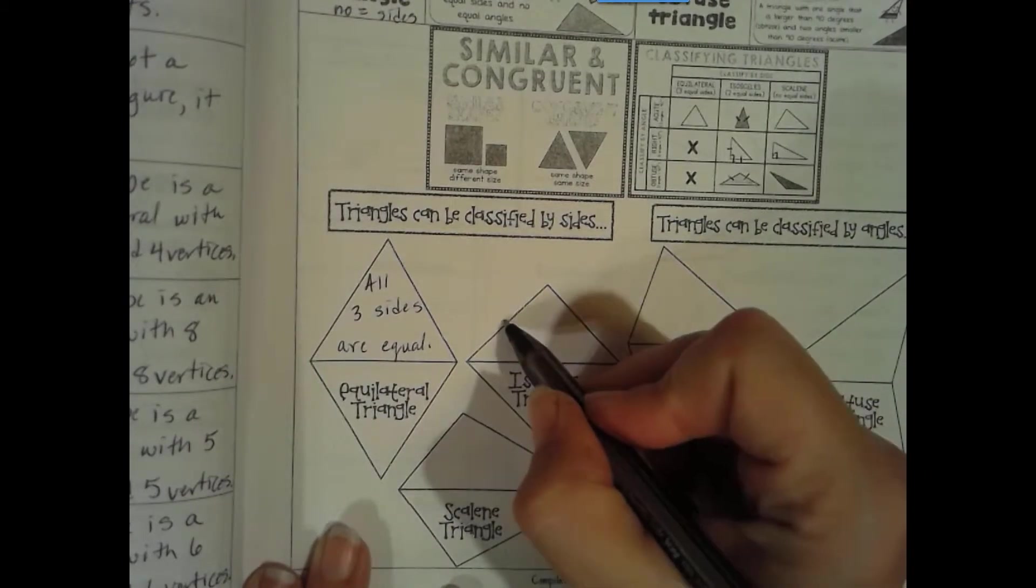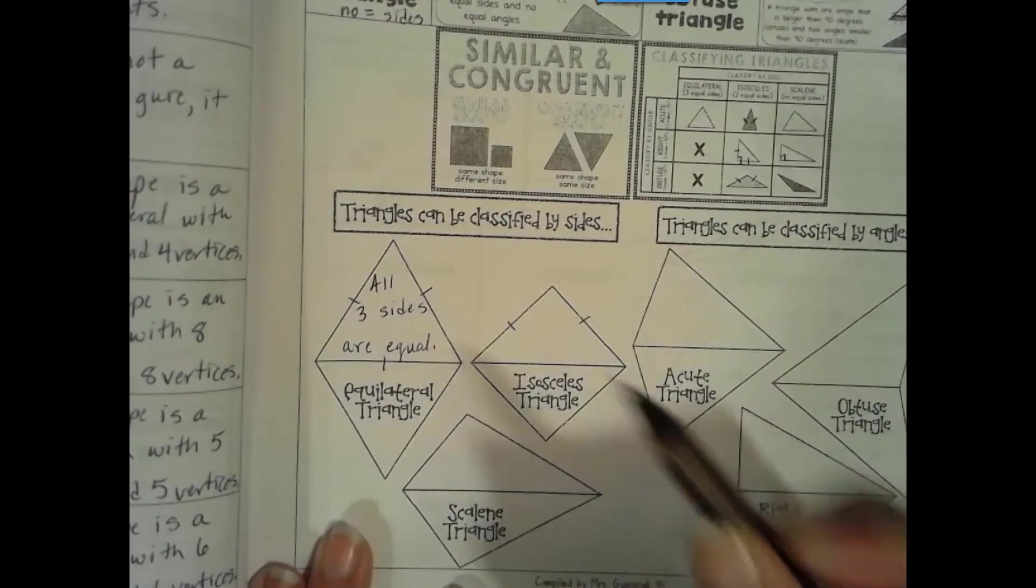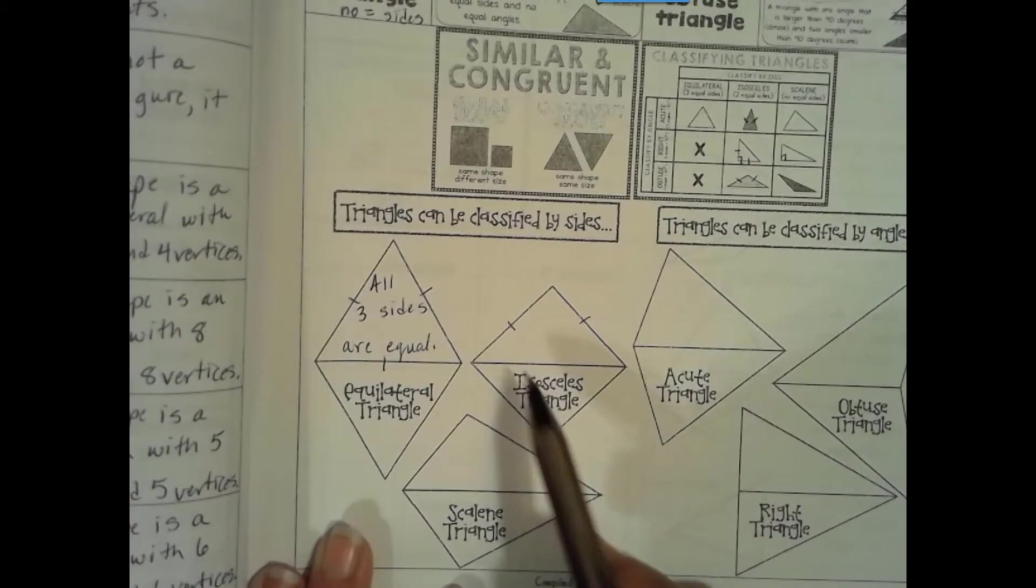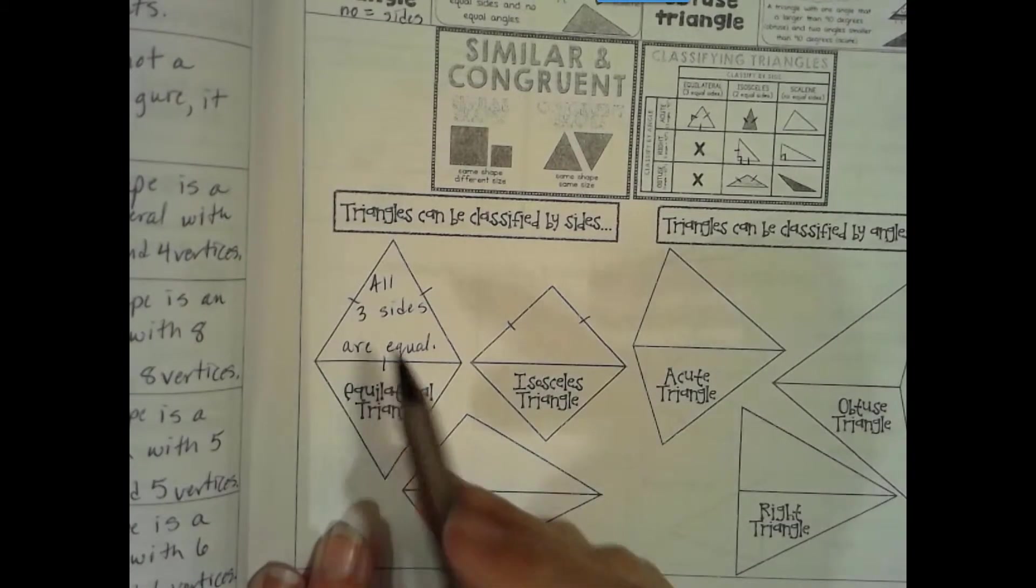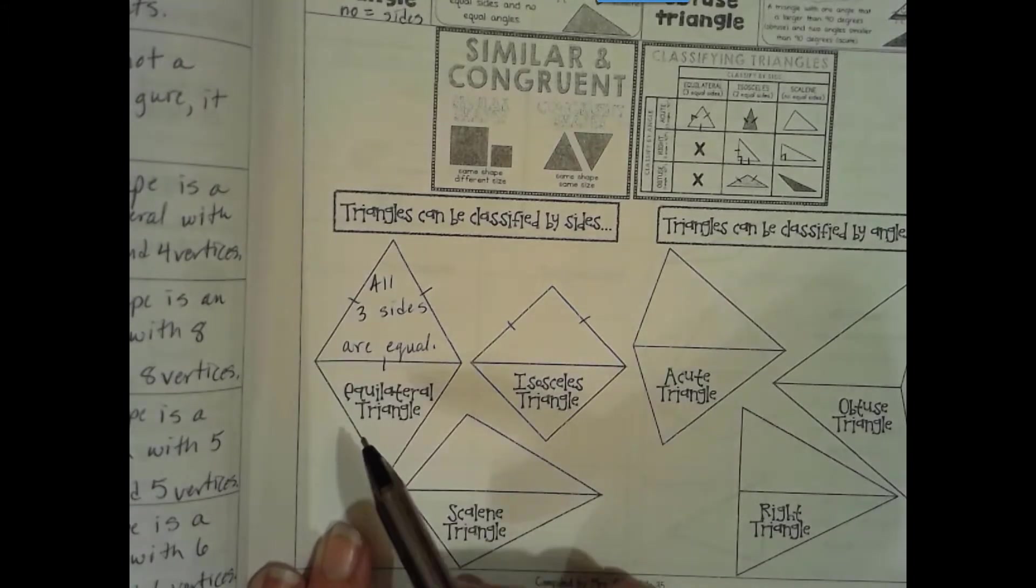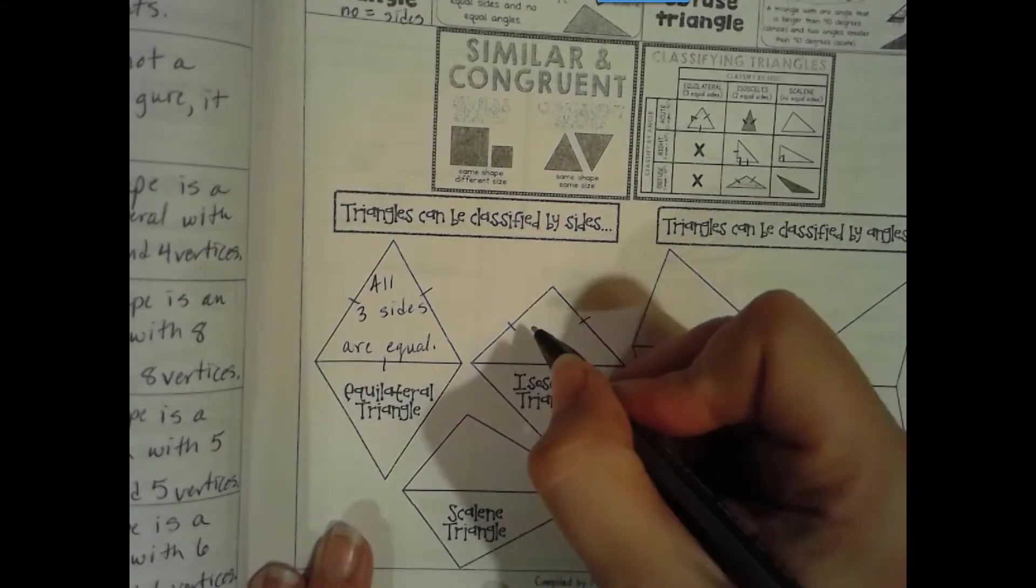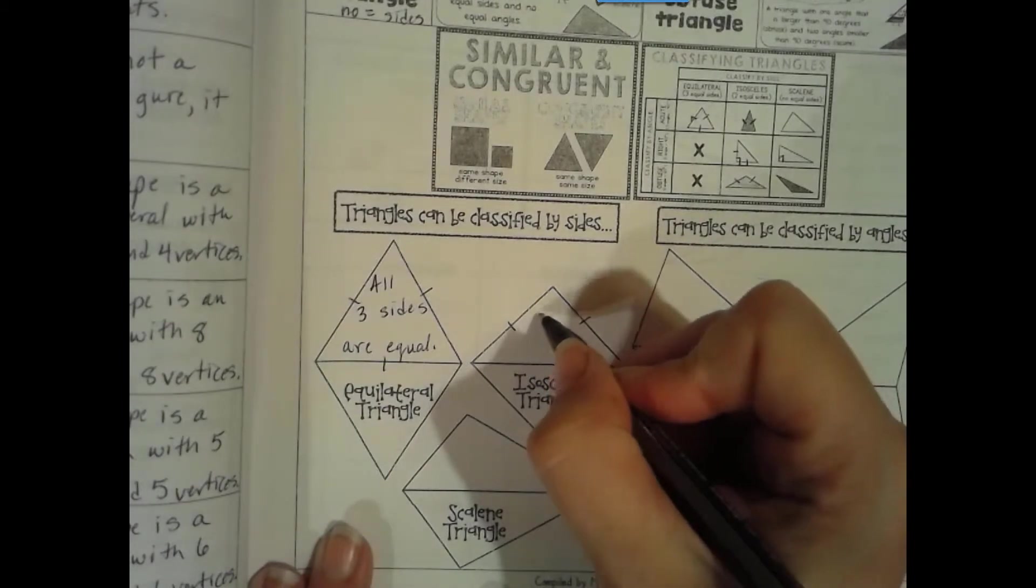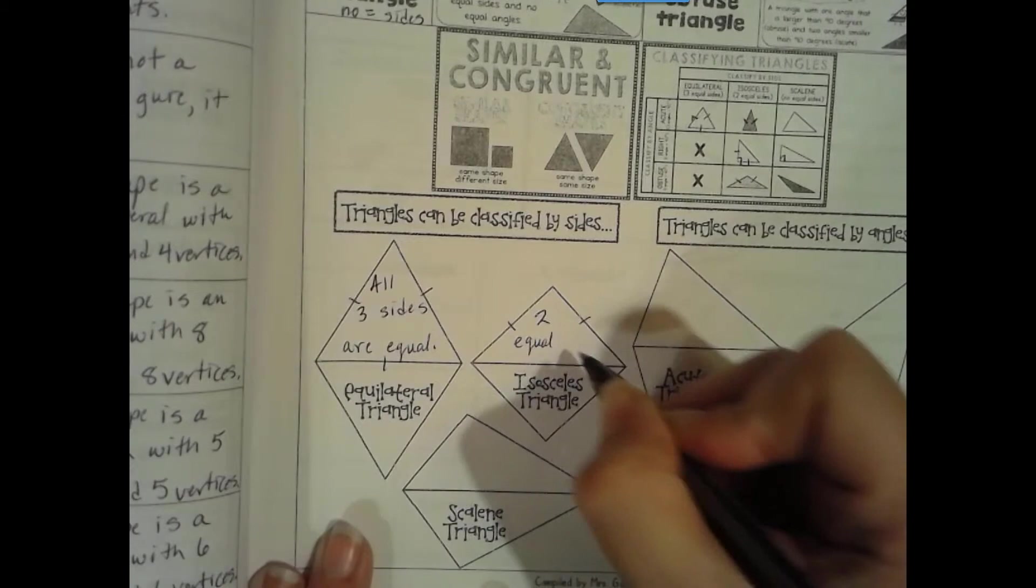For an isosceles triangle, so this has all three sides, this has two sides. You can put that on here too, because these sides show what is congruent or equal measure. Isosceles has two equal sides.